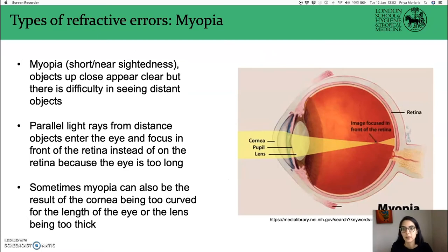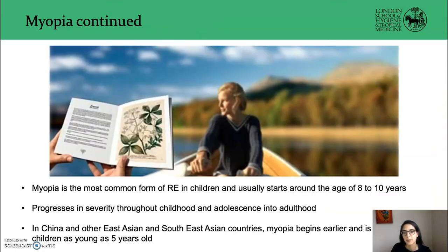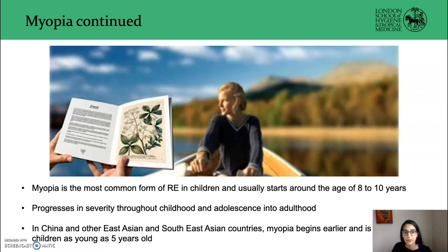Myopia or short-sightedness is when objects up close appear clear but there is difficulty seeing distant objects. Parallel light rays from distant objects enter the eye and focus in front of the retina because the eye is too long. Sometimes myopia can also result from the cornea being too curved or the lens being too thick. Myopia is the most common form of refractive error in children, usually starting around age 8 to 10 years and progressing through childhood and adolescence. However, in China and other East and Southeast Asian countries, myopia begins earlier and is prevalent in children as young as 5 years old.